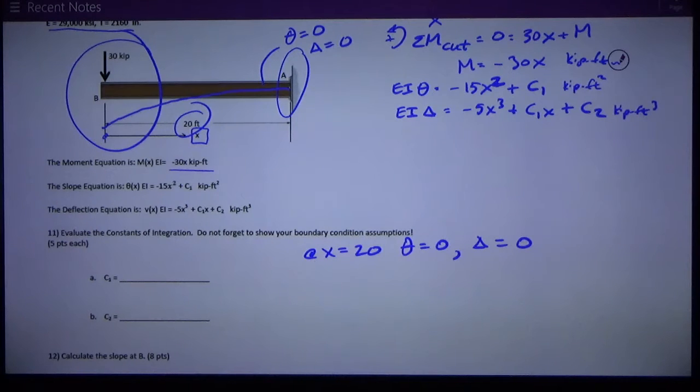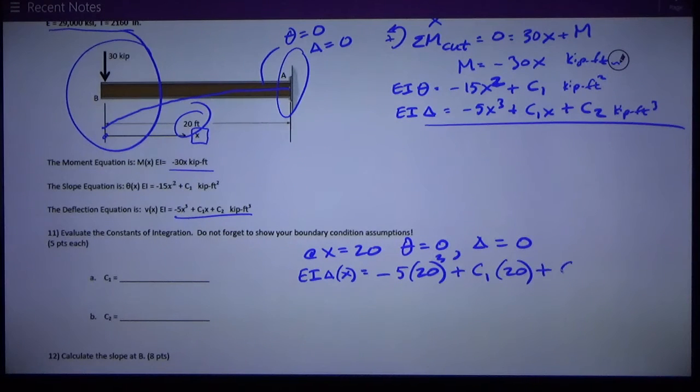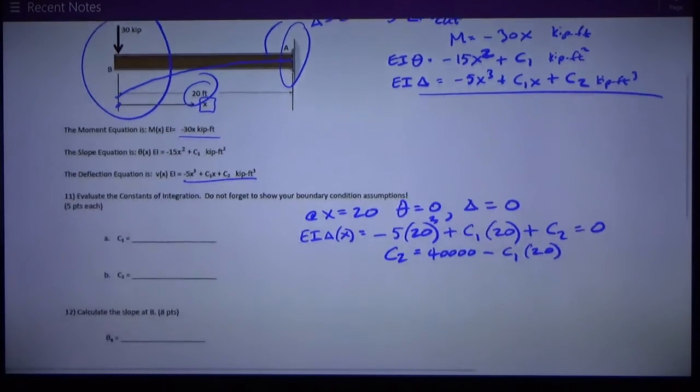So, the deflection equation for deflection looks like EI, and I always write delta X as a function of X. I'm going to plug in X equals 20 into that equation right up here, which I just developed and they gave us as a matter of fact. So, it's negative 5 times 20, that's what X is when the deflection is zero, cubed, plus C1 times 20, which is X, plus C2 equals zero. Well, I can't solve that, but I can simplify it down to, this works out to be C2 is equal to 40,000, do the numbers yourself, minus C1 times 20.